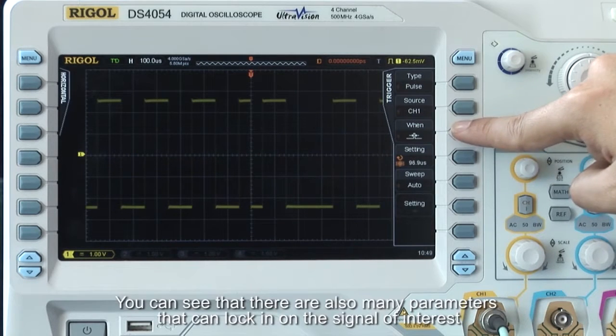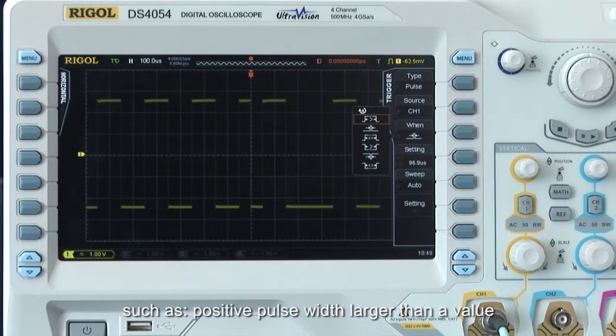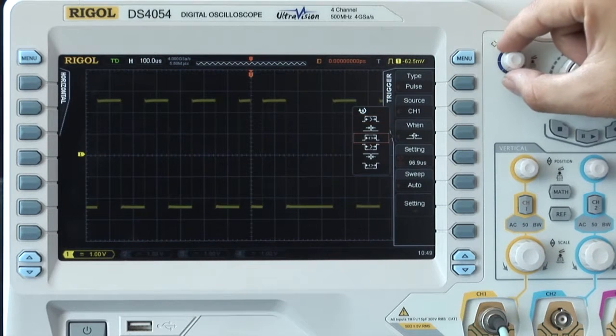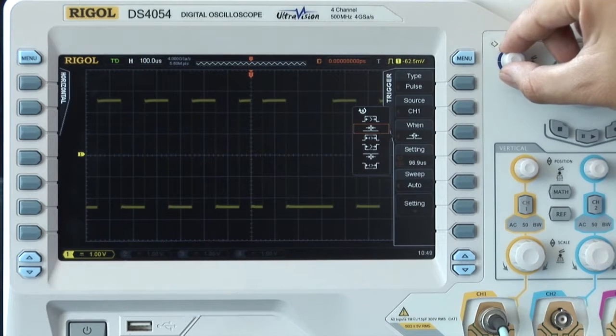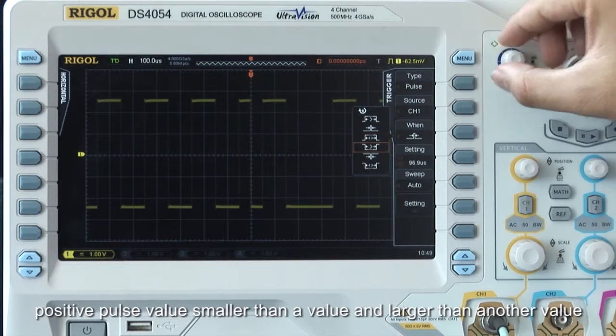You can see that there are also many other parameters that can help lock in the signal of interest, such as positive pulse width larger than a value, positive pulse width smaller than a value, and positive pulse width between two values.